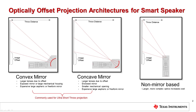An alternative to the convex mirror is the concave mirror. The concave mirror can also be aspheric or freeform, and converges the light in the path towards the image plane. This allows for a smaller mirror and smaller housing, since the size of the light ray bundle is smaller than that of the convex mirror. In the concave mirror design, the mirror is typically protected within the housing of the projector.